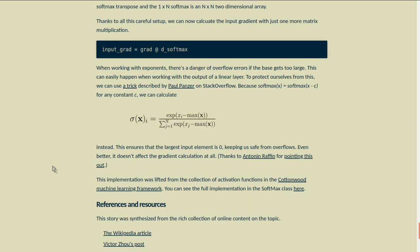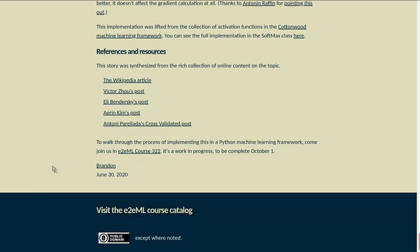This implementation was lifted from the collection of activation functions in the Cottonwood Machine Learning Framework. You can see the full implementation in the softmax class at the link. This story was synthesized from a rich collection of online content on the topic, including the Wikipedia article, Victor Zhao's post, Eli Bandersky's post, Aaron Kim's post, Anthony Pariada's cross-validated post. To walk through the process of implementing this in a Python Machine Learning Framework, come join us for End-to-End Machine Learning Course 322.